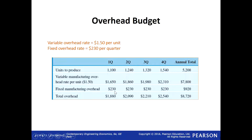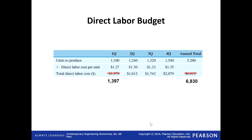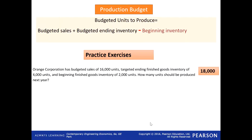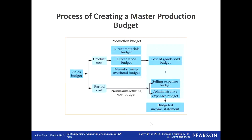For the overhead budget: the variable overhead rate is $1.50 per unit. Take units to produce and multiply by $1.50 for each quarter — these come from the production budget. There is also fixed manufacturing overhead of $230 for each quarter. Add variable and fixed together to get total overhead cost for each quarter. If you add all quarters, you get the annual cost. So now we are done with the overhead budget.